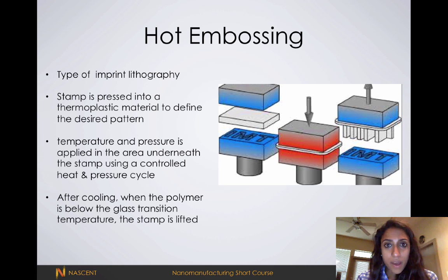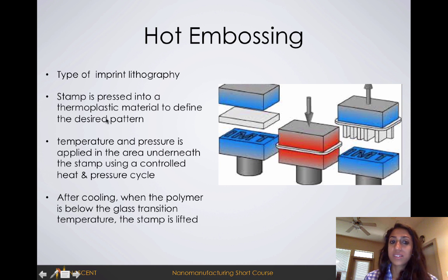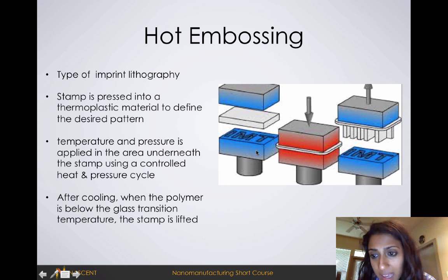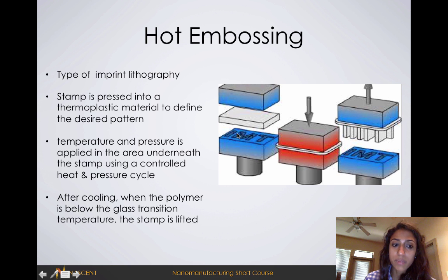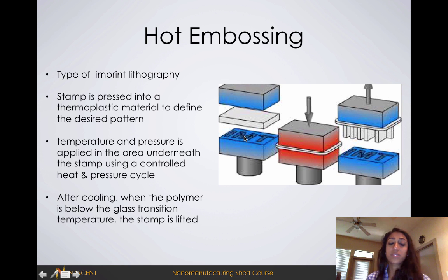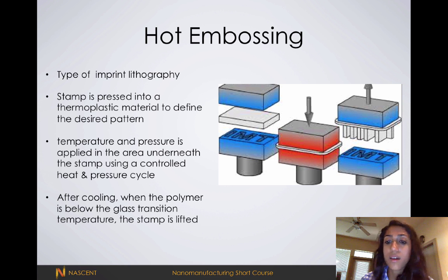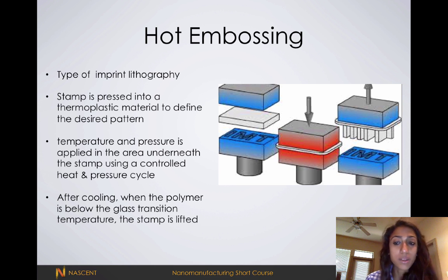Hot embossing is another type of lithography technique — specifically, a special type of imprint lithography where a stamp is pressed into a thermoplastic material to define a desired pattern. In the image shown, the desired pattern is the letters IMT. The stamp is pressed onto the polymer mold and a controlled heat and pressure cycle is applied, heating the polymer above its glass transition temperature — the point at which a material transitions from its brittle state to a more malleable, soft state so it can be molded. The polymer is then cooled back below its glass transition temperature so it becomes brittle again, the stamp is lifted, and the features are left behind.